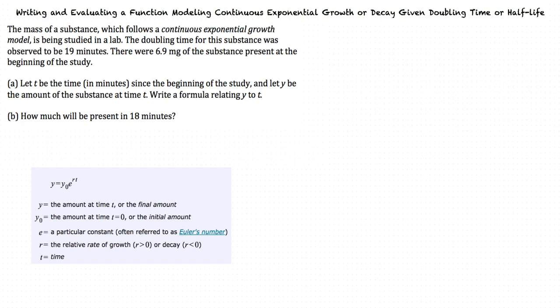So our first step is to find a formula relating y to t. We need to substitute the values we have been given into the equation. So what is our initial amount? Would it be 6.9 milligrams? Yes, that's correct. That is our y sub 0 amount.